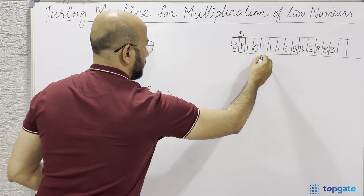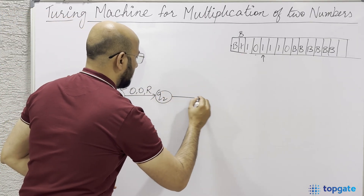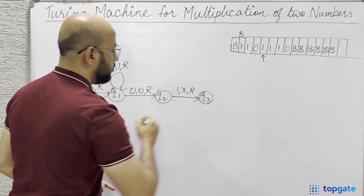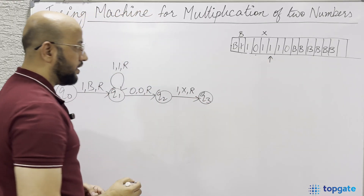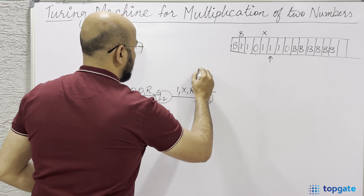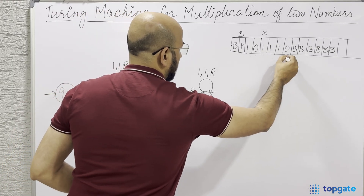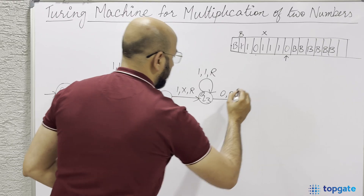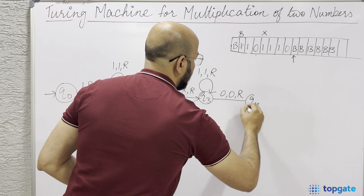The pointer now points to the first one of the second number. At Q2, if you find a 1, change it to X and go right, reaching state Q3. At Q3, take a self loop: if you find a 1, keep it as 1 and go right - these ones are skipped. If you find a 0 (separator), keep it as 0 and go right, reaching state Q4, with the pointer now pointing to the blank in the output area.